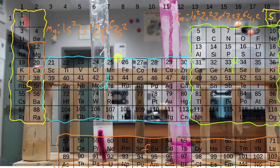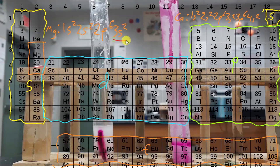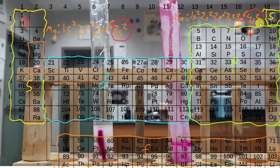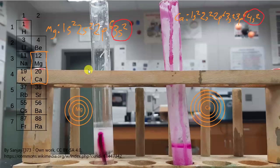Do you notice anything similar about these electron configurations? They always start off the same way, so that's not really significant. But look at the way they end — they both have 2 in their S sublevel. So at the highest principal energy level, they both have 2 electrons. Let's visualize this with a Bohr model diagram.